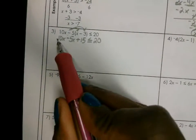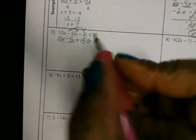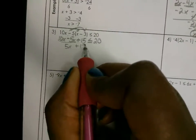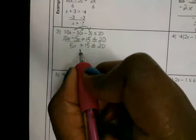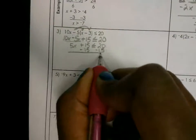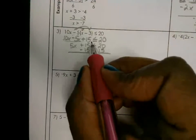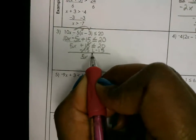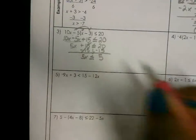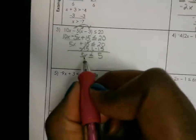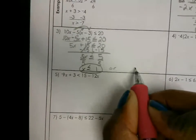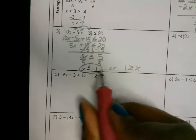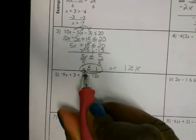Second is to combine like terms. You can combine these two terms because they are alike — this gives us 5x here. Bring down the plus 15, bring down the less than or equal to 20. Isolate the variable. We're going to subtract the 15 first. This gives you 0 and we're left with 5x, bring down the less than or equal to, and this gives us 5. To get x by itself, we're going to divide both sides by 5, giving us x less than or equal to 1. Another way to write this is 1 is greater than or equal to x — the x is still smaller.